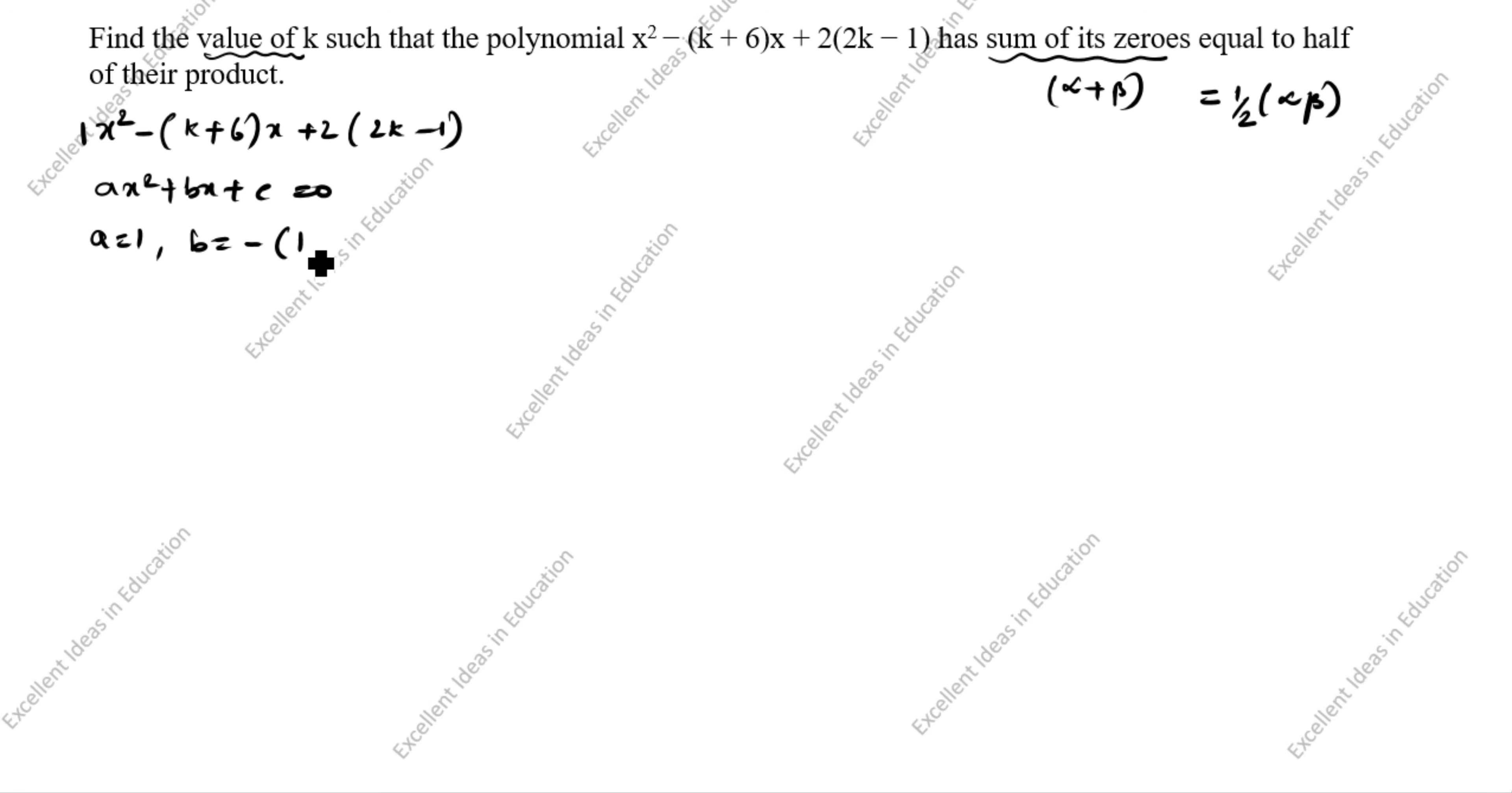b equals minus (k + 6). c equals 2(2k - 1). You see, this is c, this is b, this is a.